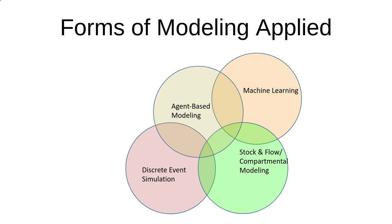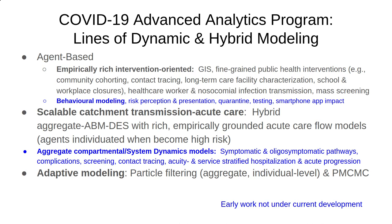Four forms of modeling have been applied here: three dynamic and one machine learning and computational statistics. Within the dynamic modeling space, there are four major approaches applied. Some played a role early on but have been largely abandoned. Others continue, and I'm going to be concentrating on three of them.